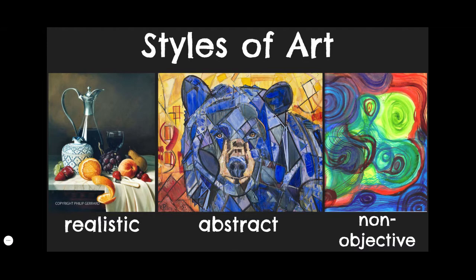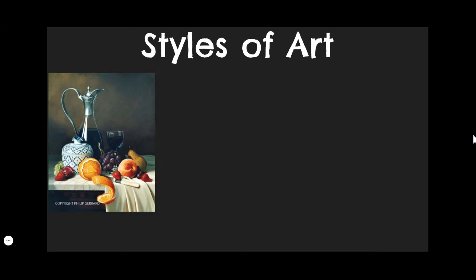We're going to talk about the three different styles of art. Every type of art, any artwork that you see, can fall into one of these three categories. Each piece of art is either realistic, abstract, or non-objective. So let's look at all three of these.